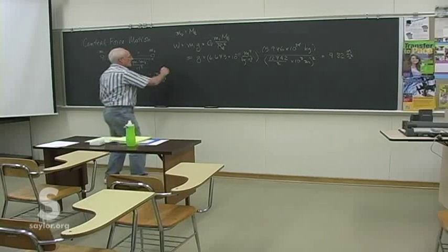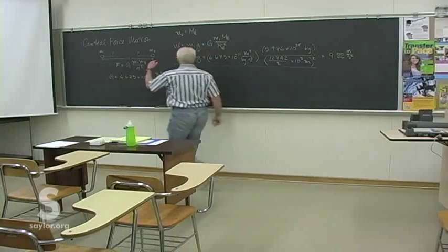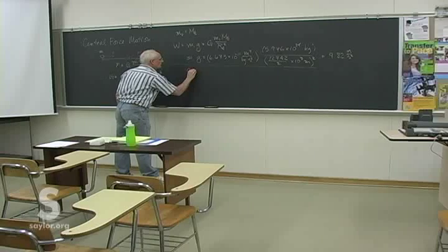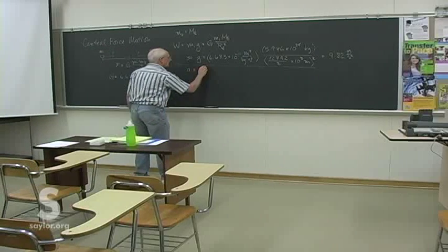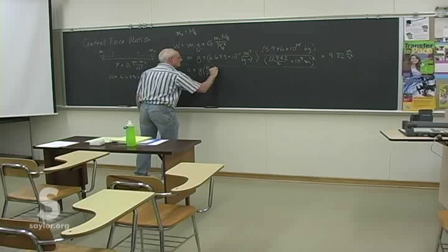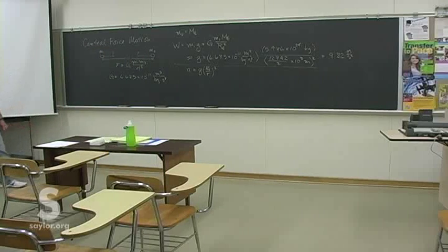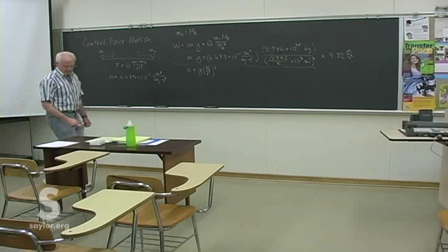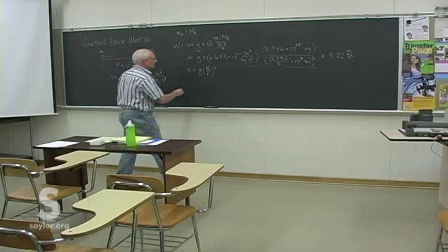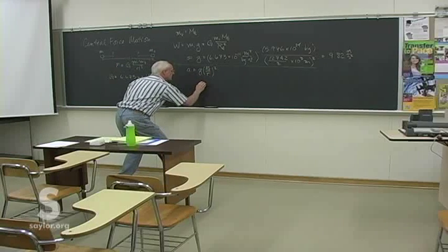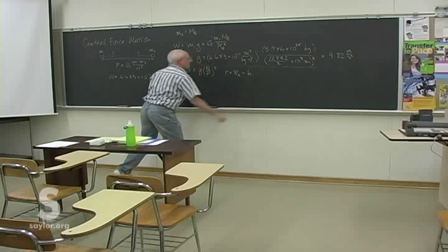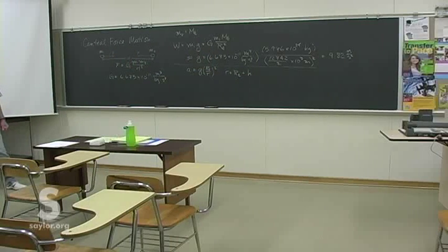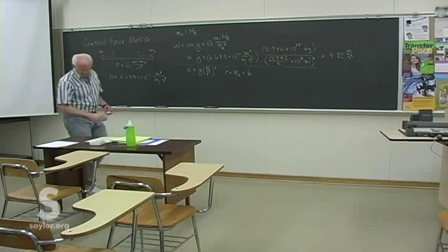At locations above the Earth's surface — which is what we need for orbital mechanics — the acceleration is reduced because you're getting farther from the Earth. It turns out the ratio goes as the square: g_eff = g times (r_E / r)², where r is the distance from the Earth's center, which is the radius of the Earth plus the height H above the surface. So we can start looking at orbits at different heights and the different speeds that go into them.